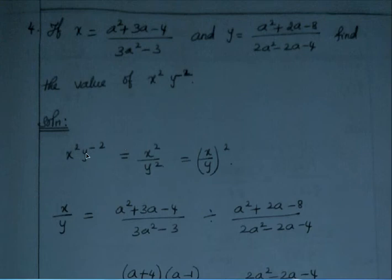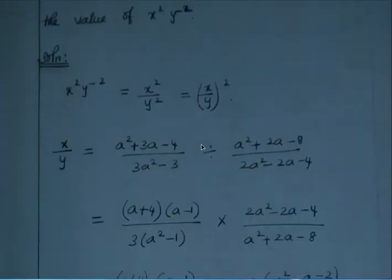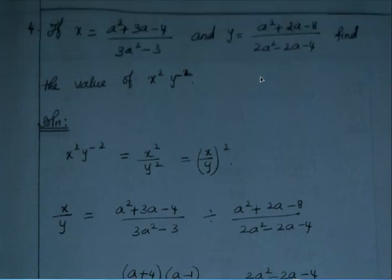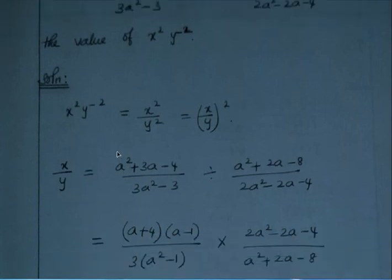y⁻² is nothing but 1/y², and power negative means the denominator becomes positive. So x² · y⁻² = x²/y², which is the same as (x/y)². To calculate this, we first find x/y, since x and y are directly given in the question.